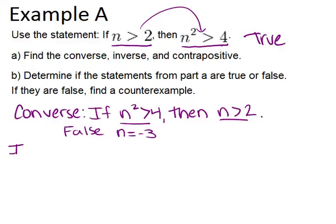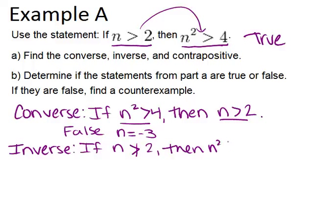Next we have the inverse. To get the inverse, you negate both parts of the original sentence. So that would be: if n is not greater than 2, then n squared is not greater than 4.